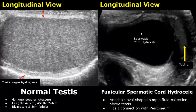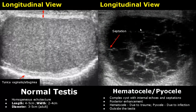The funicular spermatic cord hydrocele will communicate with the peritoneum — as you can see, it is open from here so there is a connection with the peritoneum. It is the second type of spermatic cord hydrocele. A hematocele and a pyocele have similar appearances: they consist of a complex cyst outside the testes with internal echoes and septations, and posterior enhancement will be present. A hematocele contains blood as a result of trauma, and a pyocele consists of pus and is due to infection.